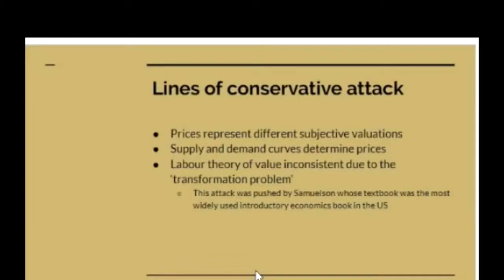If you have a series of unknown constants, and there are more unknown constants than observables, then you have a theory which is unfalsifiable. Because you can always make up combinations of these constants which will explain the observations. As a basic principle in a scientific theory, you can't have more unknowns in your model than there are data points. And the entire supply and demand model demands that you have more unknowns than data points — so it can explain everything and can never be falsified.